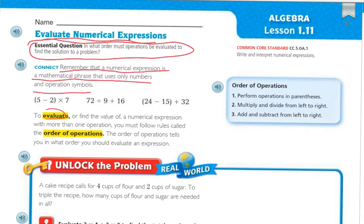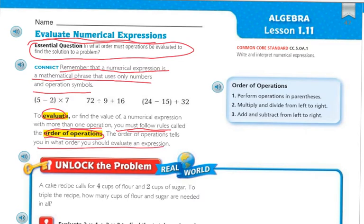To evaluate or find the value of a numerical expression with more than one operation, you must follow the rules called the order of operations. The order of operations tells you in what order you should evaluate the expression. If you don't follow the rules, you're going to get a very different answer. So the first thing you have to do is perform anything inside parentheses.